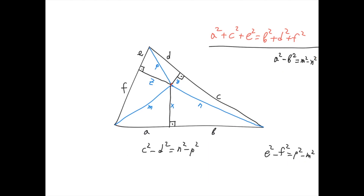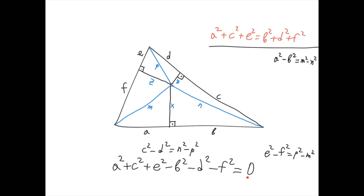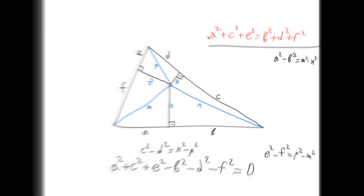Finally, let's take these three equations and add them together. On the left side we get a² + c² + e² − b² − d² − f². On the right-hand side we get m² − m² = 0, minus n² + n² = 0, and minus p² + p² = 0. So the right-hand side equals 0, which gives us a² + c² + e² = b² + d² + f², exactly what we needed to prove.